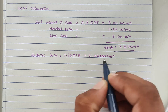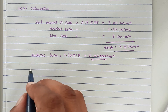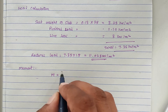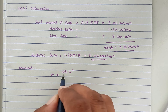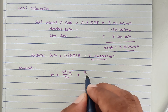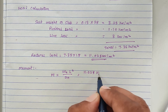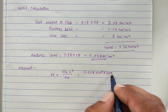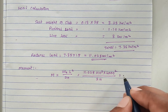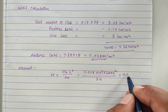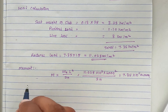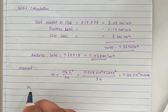From the factored load, we find the moment. For a square slab simply supported, the yield line theory moment formula is wu × l² divided by 24. Substituting values: 11.025 × 10³ × 4000² divided by 24, we get a moment of 7.35 × 10⁶ N·mm.